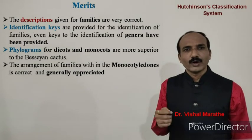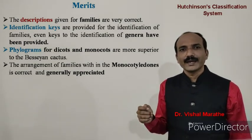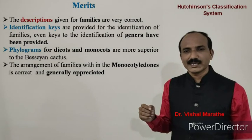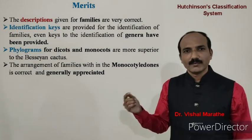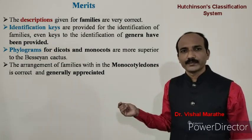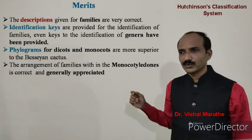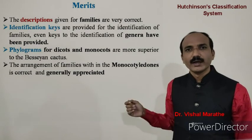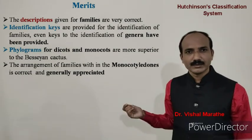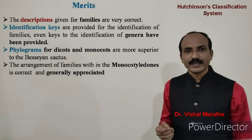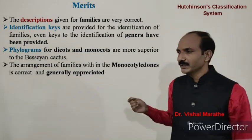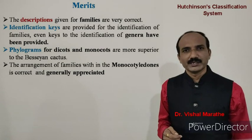He provided identification keys for families, and even keys to the identification of genera have been provided. Phylograms for dicots and monocots are more superior to Bessey's cactus diagram, and the phylograms provided in this system are very important for phylogenetic classification. The arrangement of families within the monocotyledons is correct and generally appreciated. These are the various merits of this classification system.